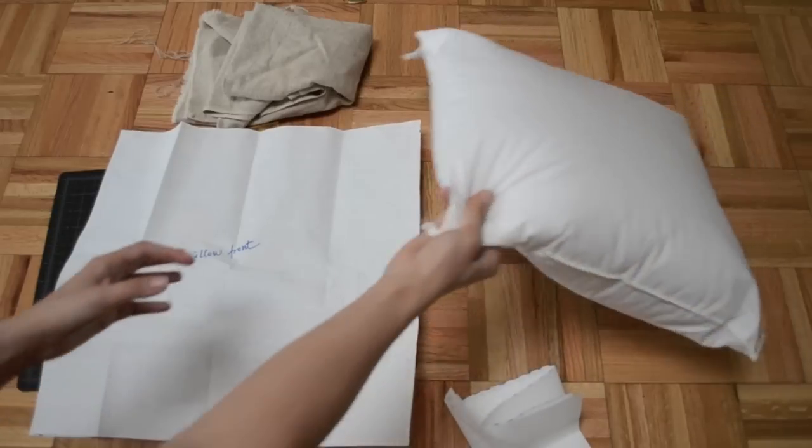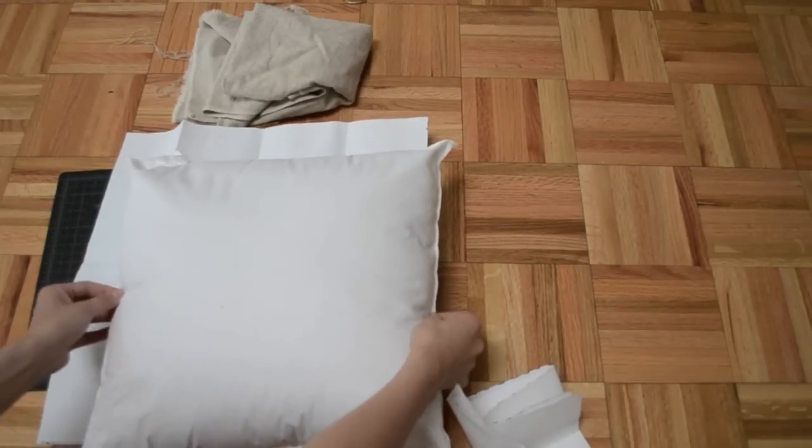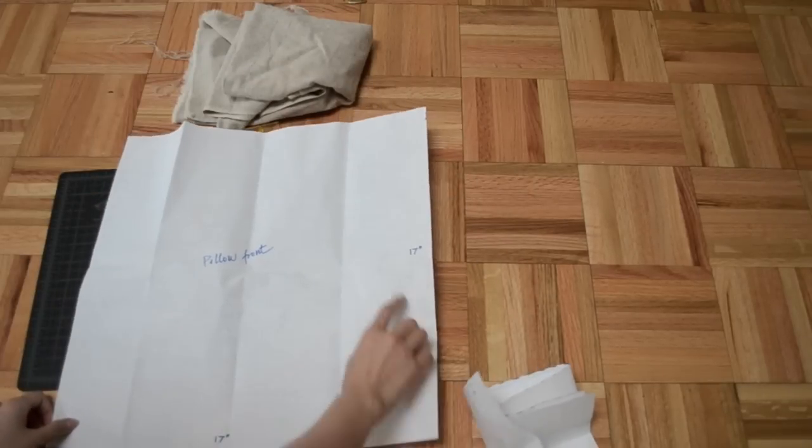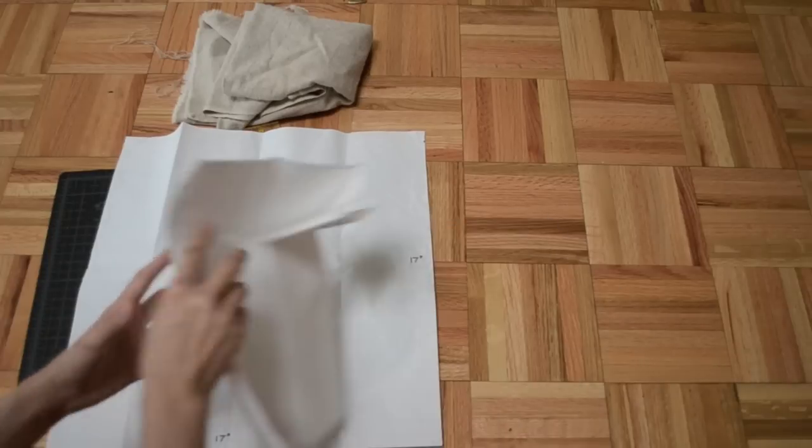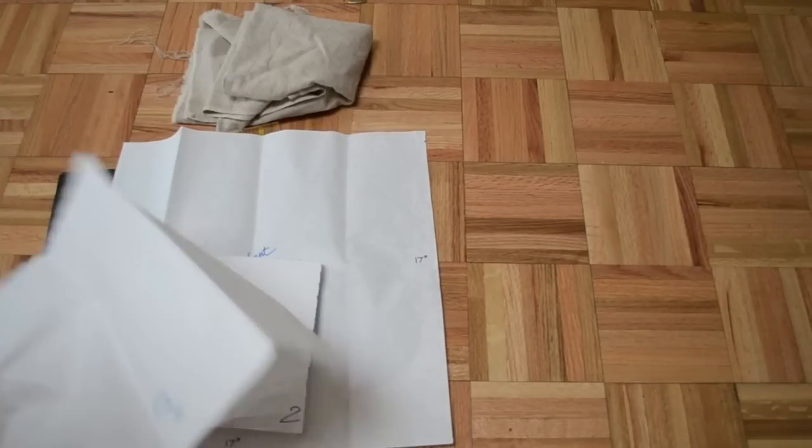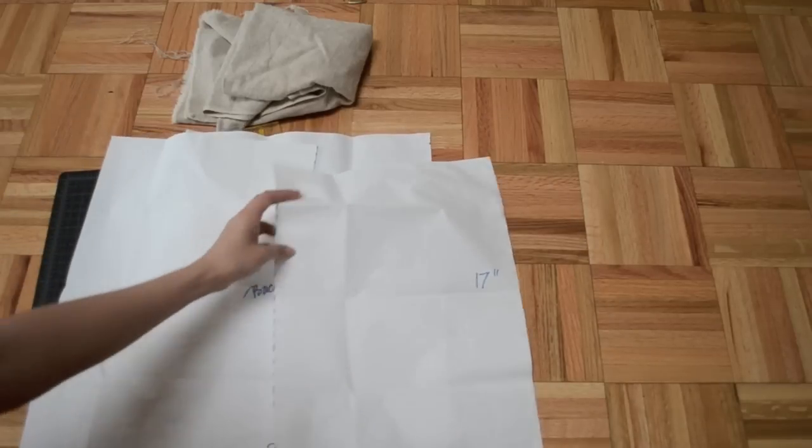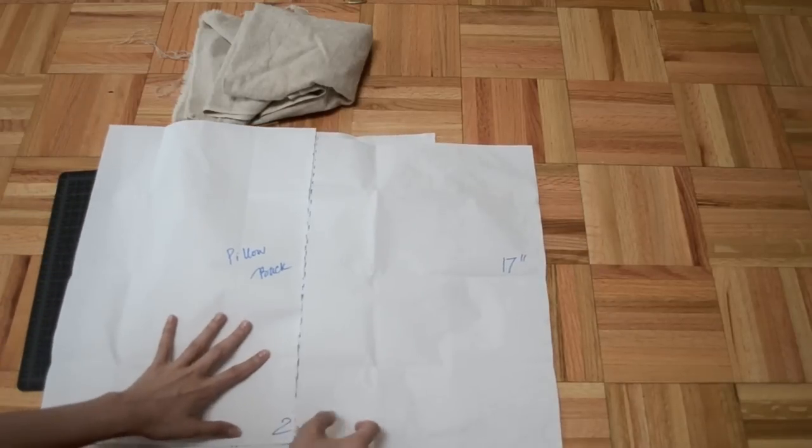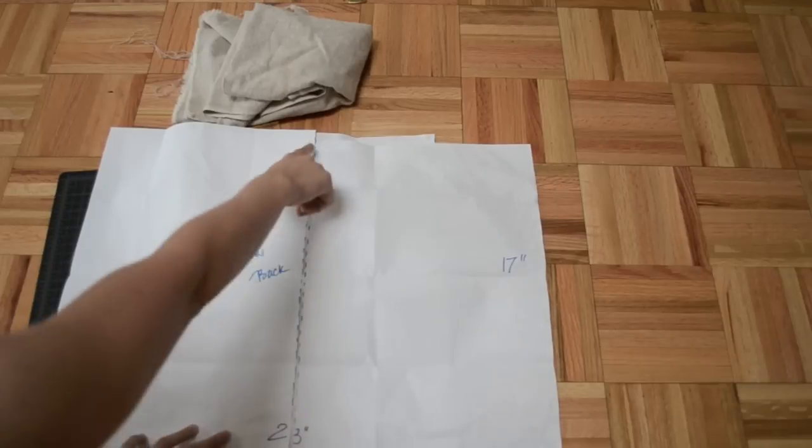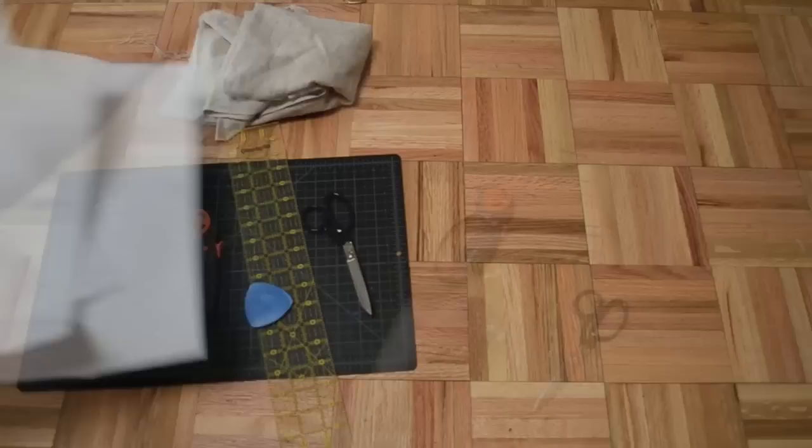Let's see, my pillow form measures 16 by 16. So I add 1 inch to all sides to make this square measure 17 by 17. And for the back of the pillow, I have this rectangle that measures 17 by 23. And then I just fold it in half and cut it so we can form the envelope for the back.